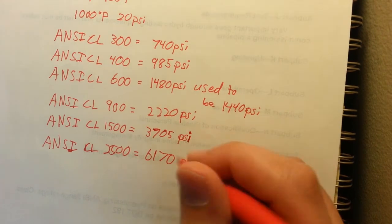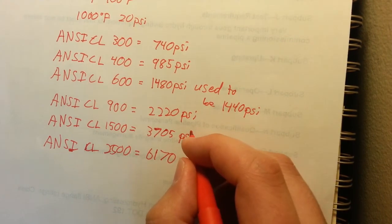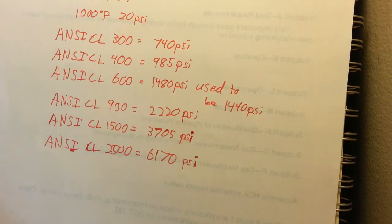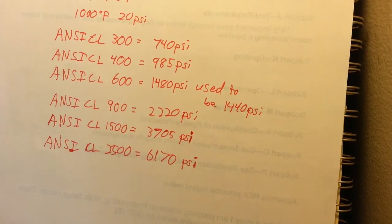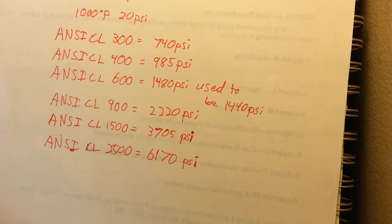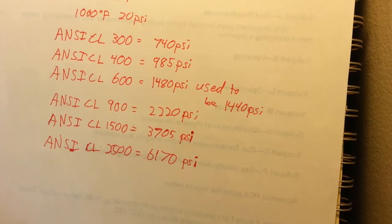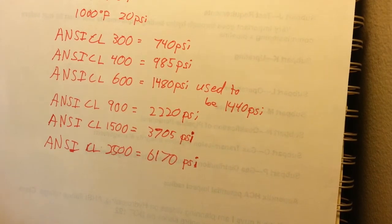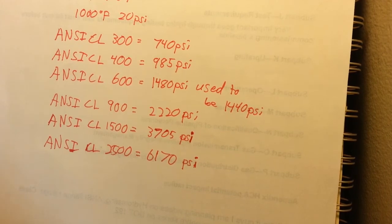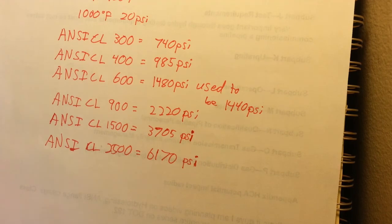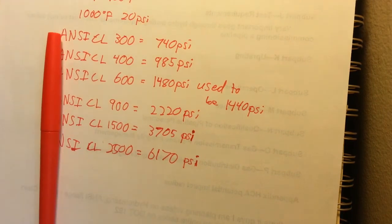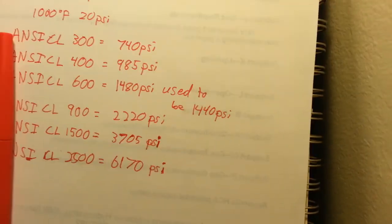So I think that's it guys. That pretty much covers ANSI class ratings. Let me know what you guys think. I'm still planning on doing a hydrotest video and maybe some other stuff too. Class locations, different things like that. And I'll probably go through and do a full DOT 192 video going through the different sub parts. So let me know what you guys think in the comments. Like and subscribe. We'll see you later.